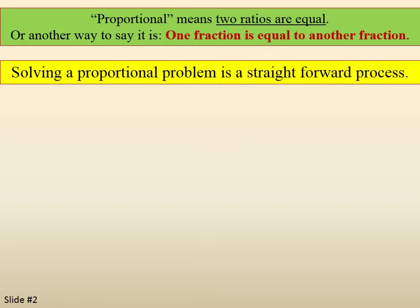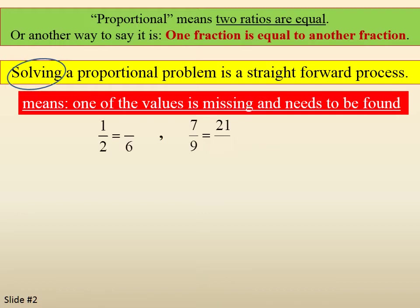Solving a proportional problem is a straightforward process. Solving means one of the values is missing and needs to be found. For example, 1/2 equals something over 6, 7/9 equals 21 over something, and something over 15 equals 4/5. These would be proportions that need to be solved.